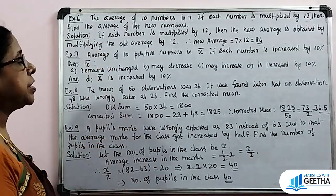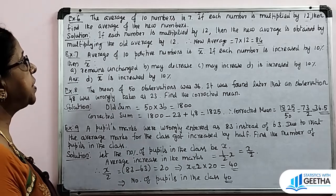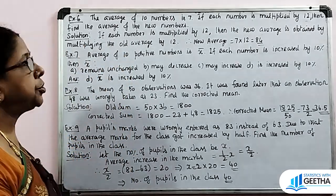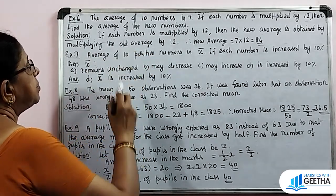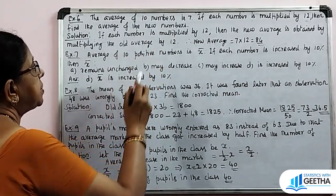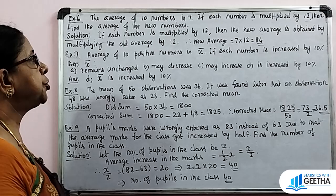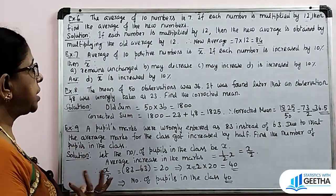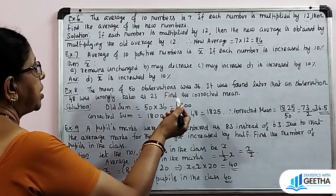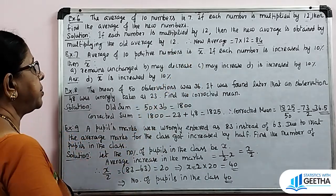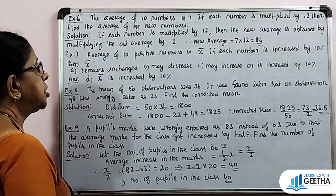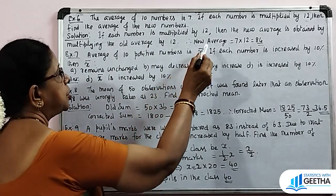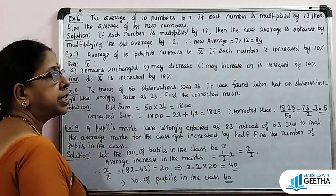Exercise number 6: The average of 10 numbers is 7. If each number is multiplied by 12, find the average of the new numbers. If each number is multiplied by 12, then the new average is obtained by multiplying the old average by 12. So the new average equals 7 into 12, that is 84.